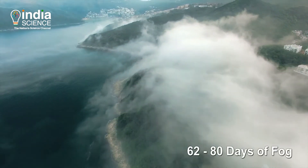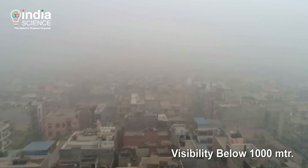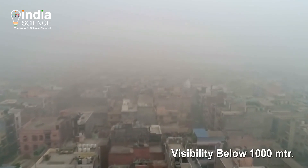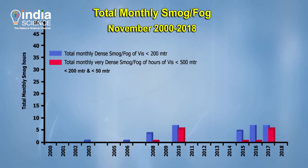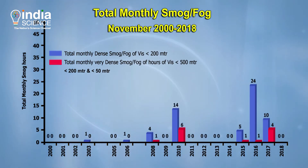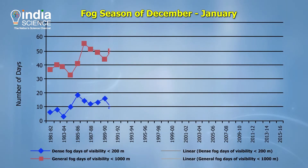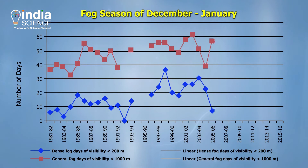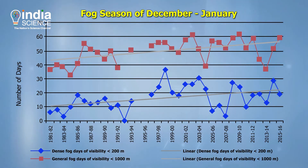On an average, 62 to 80 days of fog — when visibility drops to less than 1000 meters — hit north India every year. But their number, intensity, and duration are rising steadily, giving sleepless nights to concerned agencies. India's morning low-visibility days have increased from 6.7 percent to 27.3 percent.